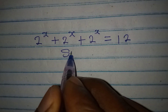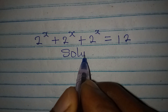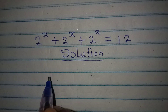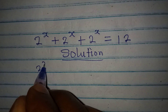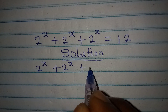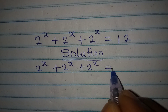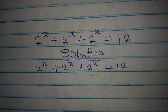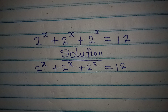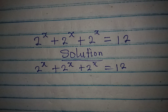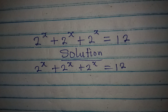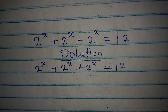Hello everyone, let's deal with this very quickly. We have 2 to the power of x plus 2 to the power of x plus 2 to the power of x equals 12. Now by looking at this, some persons must have guessed what the answer will be, but I want us to see how this can be solved.